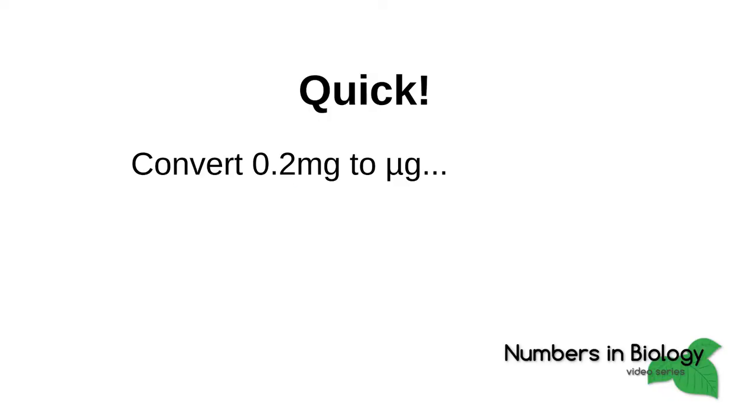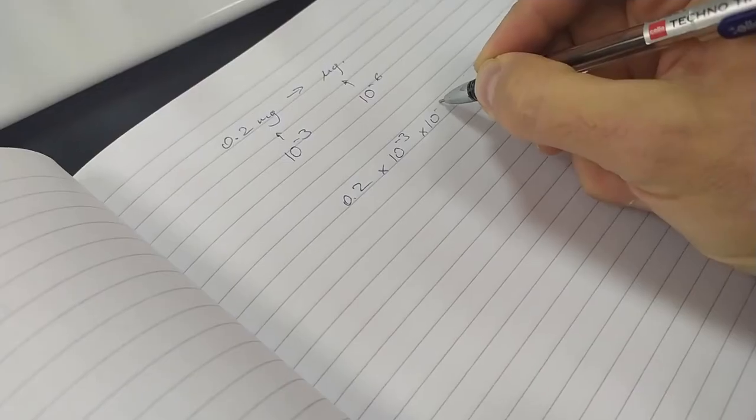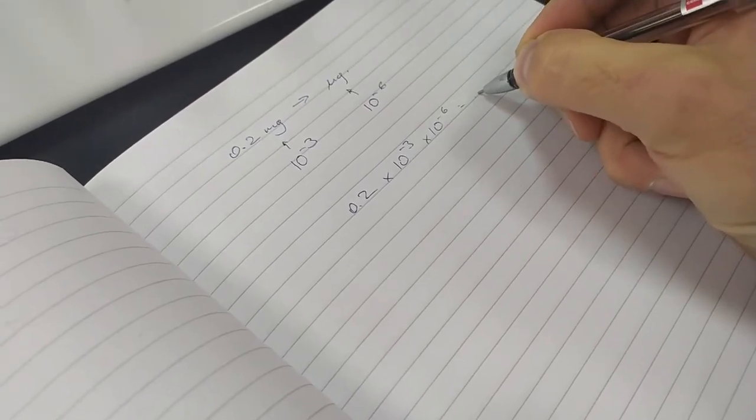Then they pull out their calculators or worse yet their mobile phones—labs are messy guys, keep your phones out of it—and then they try to remember the relevant exponents. This is 10 to the minus 6.